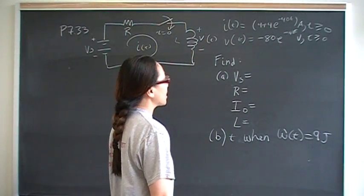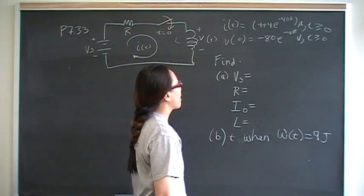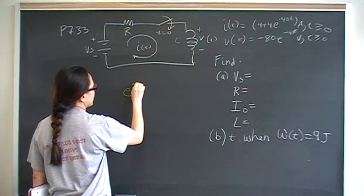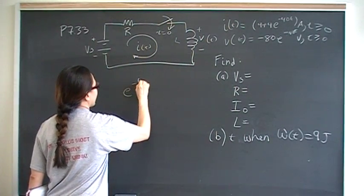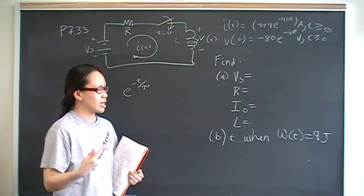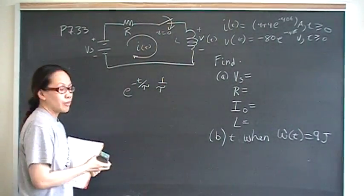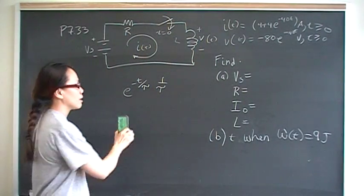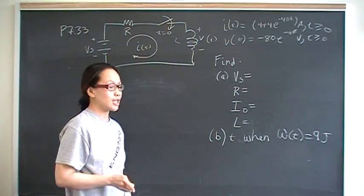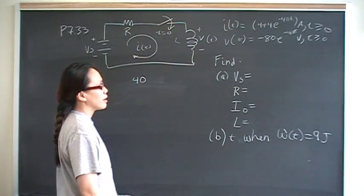When looking at general equations, always remember to check the format of the voltage and current given to you — that information is communicated in the exponent. The exponent is of the form negative T over tau. So make it a habit to look at the exponent and remember that number is really 1 over tau. It immediately gives you information. I'm a minimalist — I take the path of least resistance, and you should too.